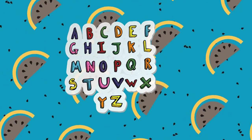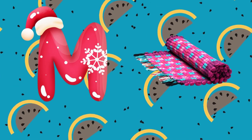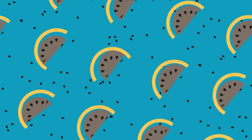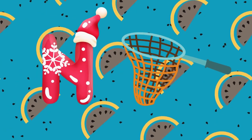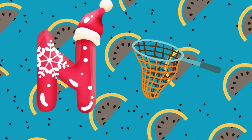M is for mat, m-m-mat. N is for net, n-n-net.